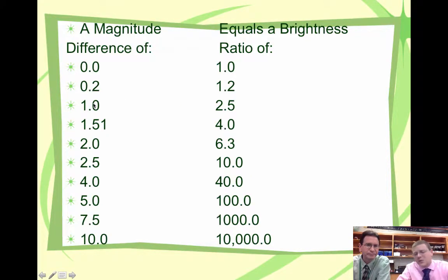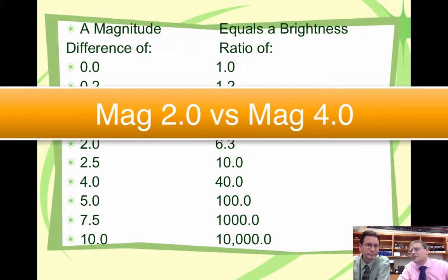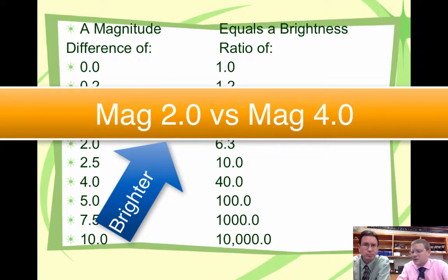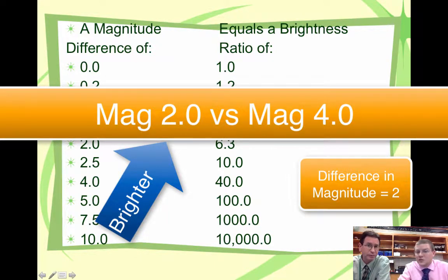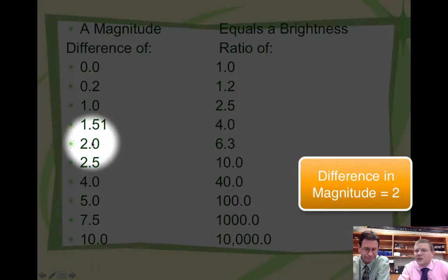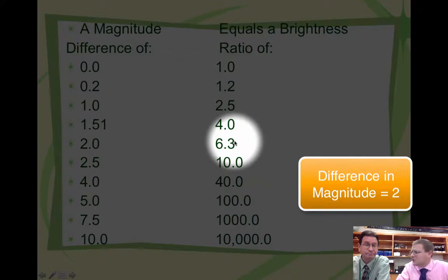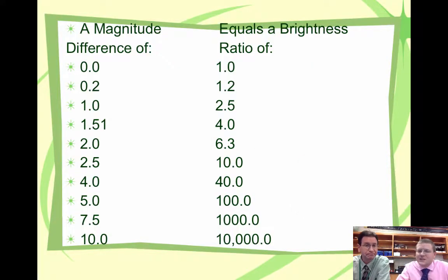But what if I compare a 2.0 and a 4.0? Which one's brighter? 2.0 should be brighter than the 4.0. And what's the difference between a 2.0 and a 4.0 in terms of magnitude? It can't be twice as bright because it's not linear. So the number has to be a little bit different. So the difference is 2 from 2 to 4. And you take 2.5 times 2.5 and you actually get 6.3 times as bright. So it's a very odd scale here. A difference of 5 in magnitude is 100 times brighter than another star.